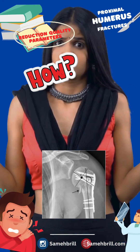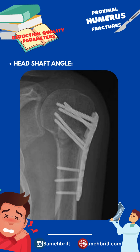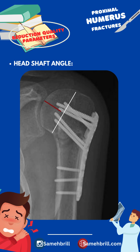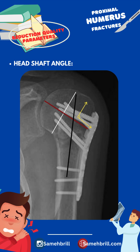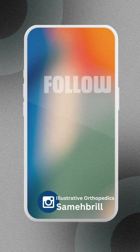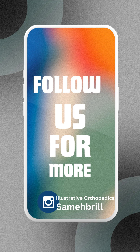On a side note, how to measure the head shaft alignment? We simply draw a line from the superior border to the inferior border of the articular surface. Then a line is drawn perpendicular to this line, passing through the center of the humeral head and intersecting the humeral shaft line. The angle formed is defined as the head shaft angle.